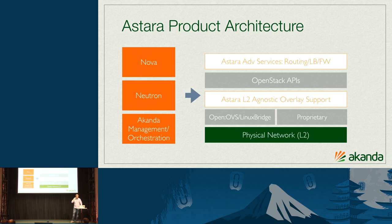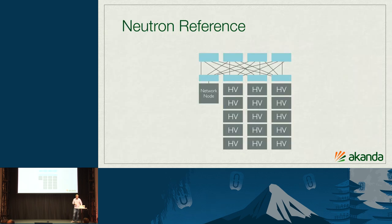Above that you'll find the OpenStack APIs, and then the advanced services in terms of routing, load balancing, and firewall — once the Neutron team in Mitaka finishes rebooting that. Looking at Neutron from a data path perspective, typically you're running a network node. You may have one of these, you may have ten of these.